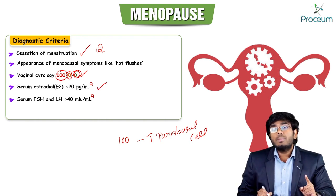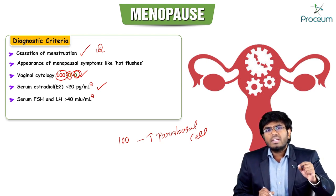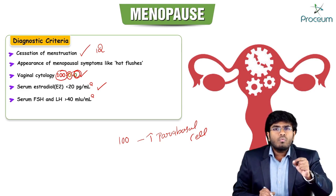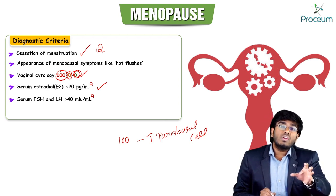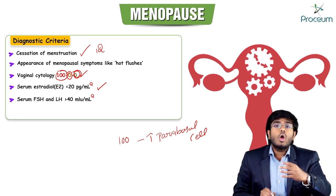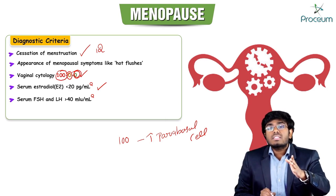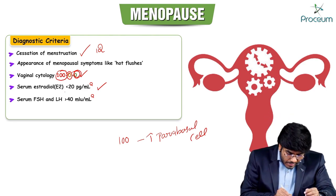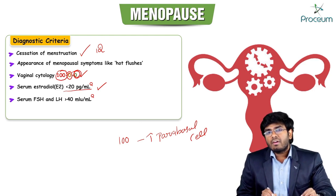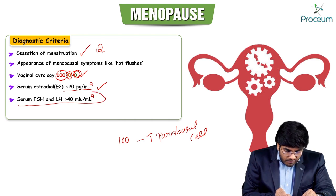Serum estradiol levels less than 20 picograms per mL indicate menopause. This is because ovarian failure occurs — there are no ovarian follicles remaining, so the ovaries are no longer synthesizing estrogens, causing estrogen levels to drop below 20 pg/mL.